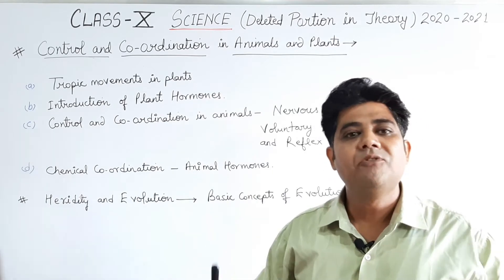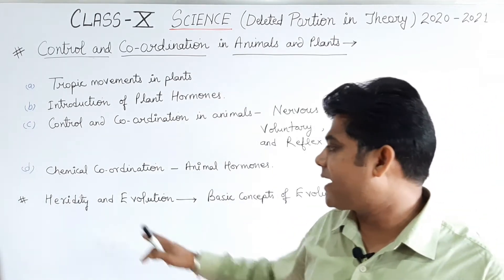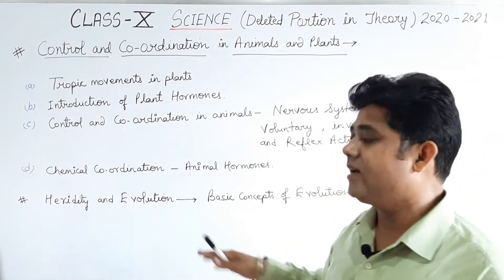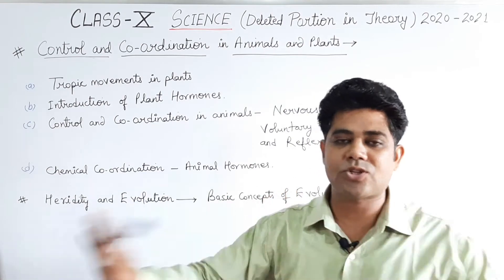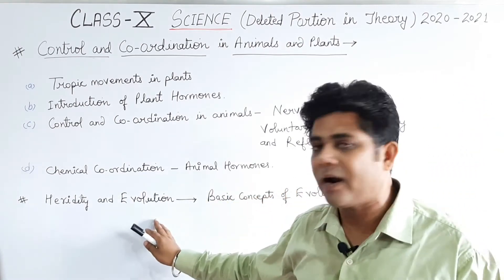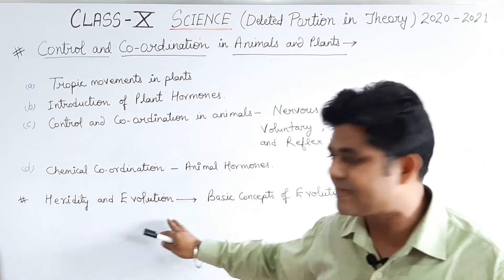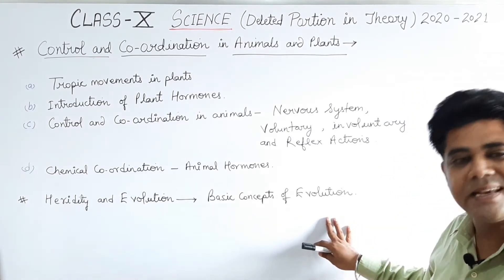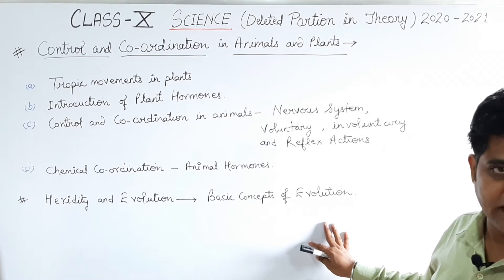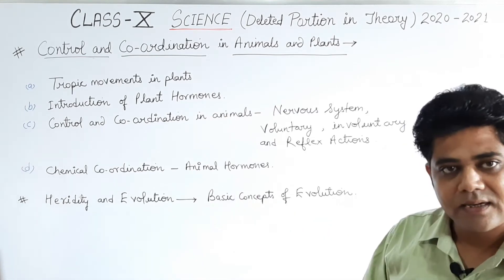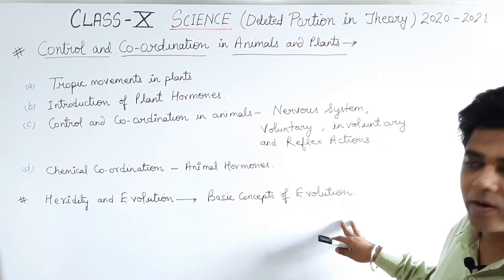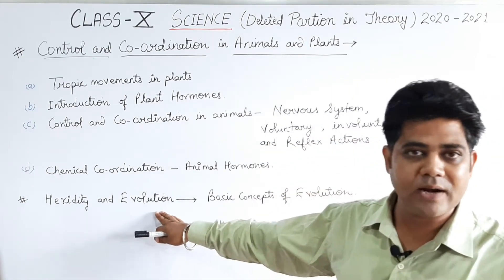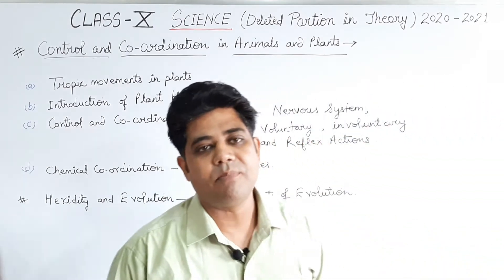The next important chapter is Heredity and Evolution. The heredity part is completely retained — nothing has been removed from it. Only from the evolution section, the basic concepts of evolution have been removed. The rest of the evolution content will be covered. So in heredity and evolution, you have relaxation only in the basic concepts of evolution.